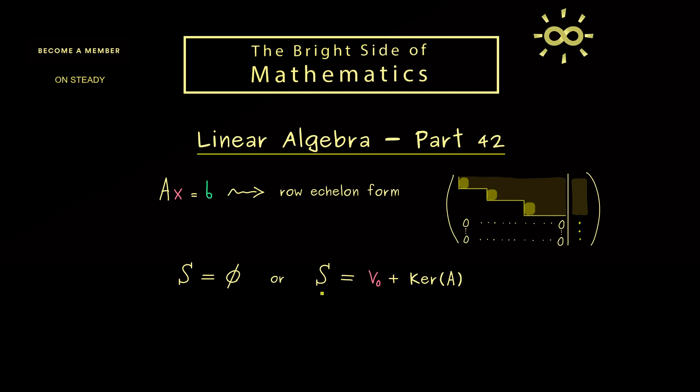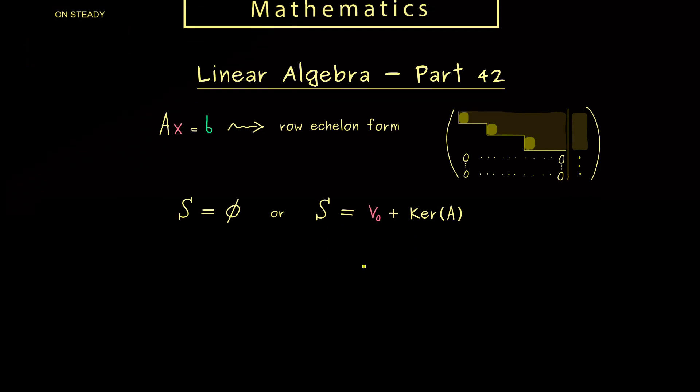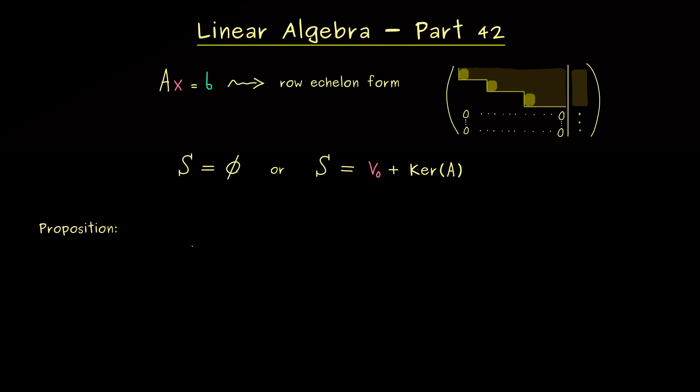And with that we can immediately conclude what it means to have uniqueness for a solution. Hence, all our knowledge here we can summarize in a proposition. So we consider the general case that we have a matrix A with m rows and n columns. And now we want to write down equivalences to the statement that the system Ax = b has at most one solution. So you see, we don't talk about the existence of solutions but just about the uniqueness if there is a solution.